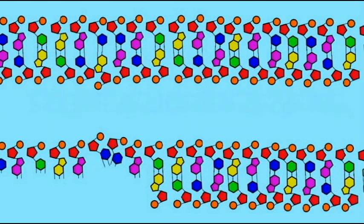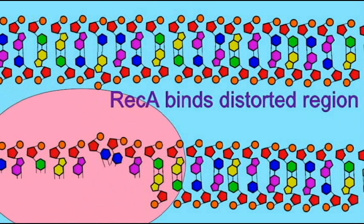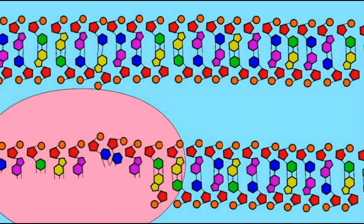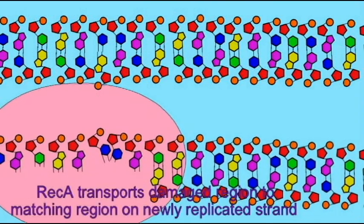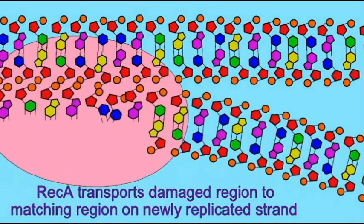Therefore, a protein known as RecA, which is involved in crossing over during meiosis, grasps the area that has damage and then moves it to the other section of the replication fork where the other strand has successfully been replicated.